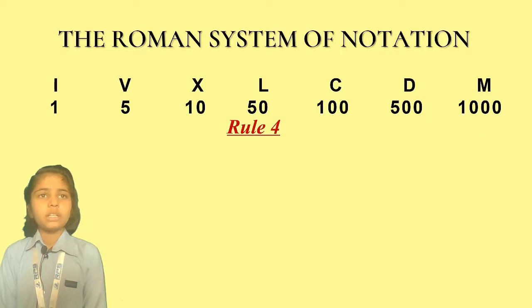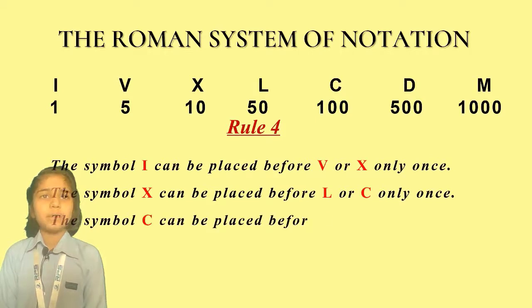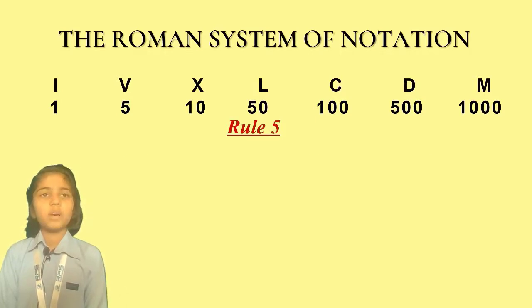Rule number 4. The symbol I can be placed before V or X only once. The symbol X can be placed before L or C only once. The symbol C can be placed before D or M only once.